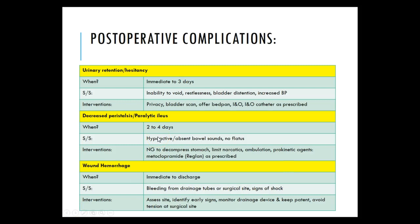Urinary retention or hesitancy is the inability to void. The patient may be restless with bladder distension, which may be visibly apparent, and may have elevated blood pressure. Ensure the patient has adequate privacy to void. A bladder scan can validate retention — offer a bedpan, monitor I&Os, and an in-and-out catheter may be prescribed. Most providers prefer to avoid long-term Foley catheters, but if the scan shows a large amount of urine, an in-and-out catheter may be sufficient.